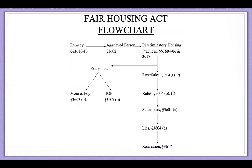Looking again at the flowchart, we have summarized the remedies available to the broadly defined aggrieved persons for discriminatory housing practices — covering rentals or sales, rules and terms and conditions, discriminatory statements about housing transactions, lies about housing transactions, and retaliation for asserting rights under the Fair Housing Act — with a few exceptions noted on the left.